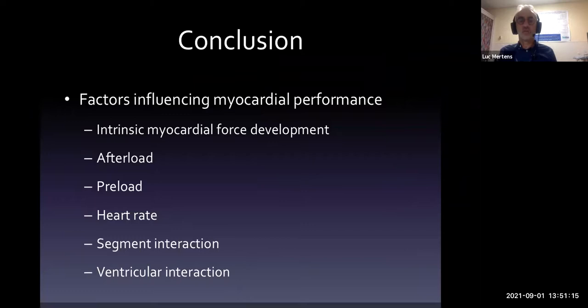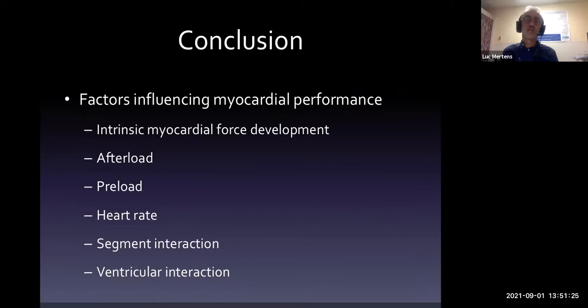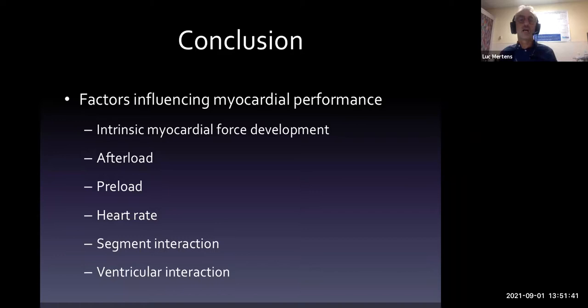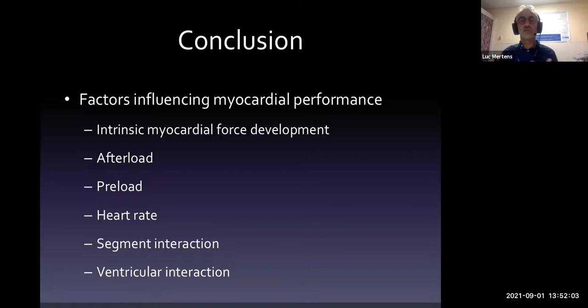This is a brief overview of the important determinants of cardiac function. I've discussed intrinsic myocardial force development, contractility, afterload concepts, preload, heart rate, synchronicity, and ventricular-ventricular interactions. Remember: don't equalize afterload with just blood pressure — that's physiologically a mistake. Cardiac function is determined by all of these parameters. You cannot simply say the contractility of the heart is normal or abnormal when looking at echo — it all depends on these multiple interacting factors.